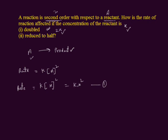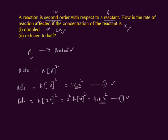If the concentration is doubled, it becomes 2x. Using the rate law: rate equals k times (2x) squared. Taking 2 out of the bracket gives 2 squared times k times x squared, which equals 4kx squared. We label this equation 2. Comparing equation 1 with equation 2, kx squared is the same in both, but equation 2 is 4 times equation 1. So when concentration is doubled, the rate of reaction increases by four times.